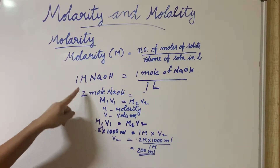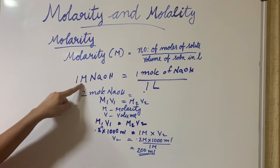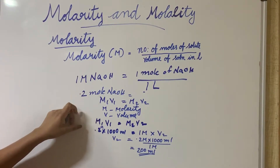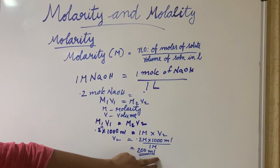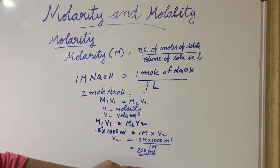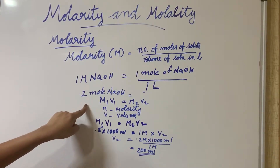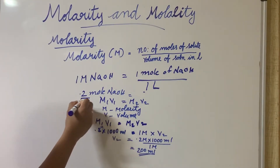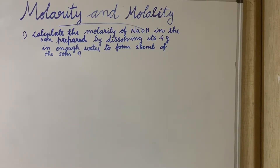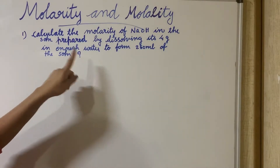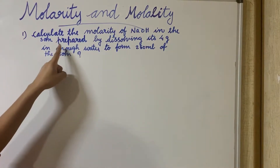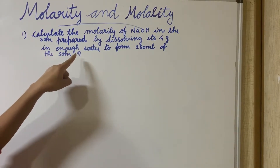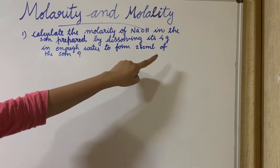We are adding 0.2 mol to the solution. When we dilute with water, we add water but the number of moles of NaOH remains the same. Now we have a problem with molarity: calculate the molarity of NaOH in the solution prepared by dissolving 4 grams in enough water to form 250 ml of solution.